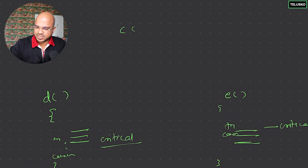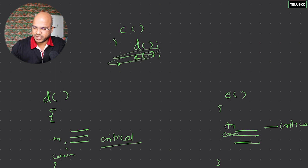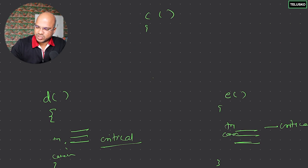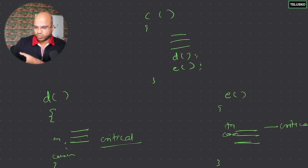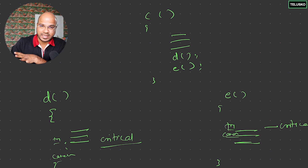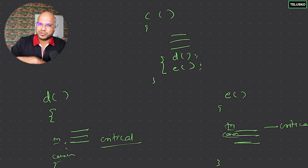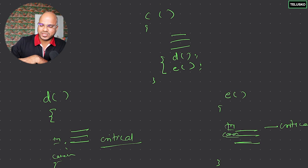What if we have a method `c` that calls both `d` and `e`? Method `c` has multiple statements, two of which are the calls to `d` and `e`. Now, if `d` and `e` both raise the same exception because they have similar critical statements, instead of handling try-catch inside each of `d` and `e`, we could handle it centrally in `c`.